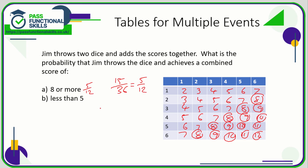Less than five — so not including five — counting those outcomes: one, two, three, four, five, six. So that's six out of 36. And we can divide top and bottom by six to get one sixth. So the probability of scoring less than five is one sixth.